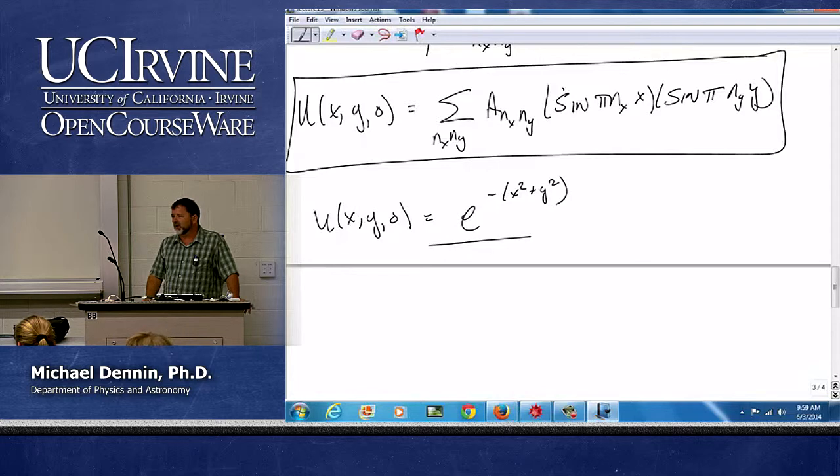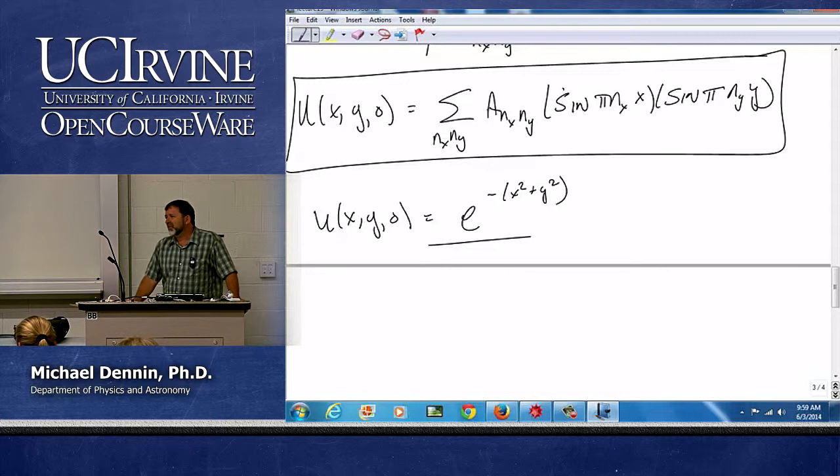E to the minus x squared is a Gaussian. There's a few functions you should know, you should know a Lorentzian and a Gaussian, go out and memorize them.